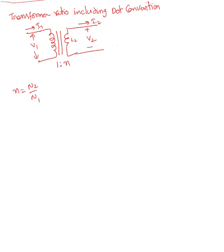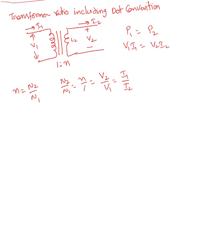Without any dots, we can say n2 over n1, which is n over 1, equals v2 over v1, which equals i1 over i2, because power on both ends is the same: p1 = p2, so v1·i1 = v2·i2. Assuming cost equals 1, v2 over v1 equals i1 over i2. This is the transformer ratio without any dot convention. Now we'll include the dots.